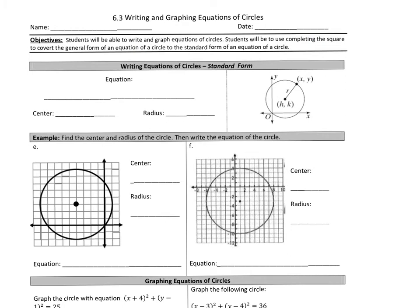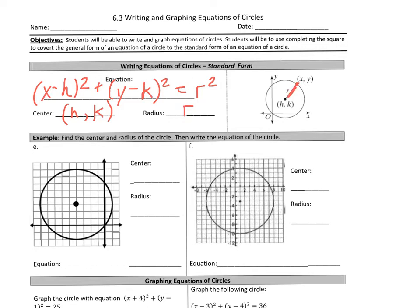So for the equation of a circle, it's going to be written out like this: x minus h squared plus y minus k squared equals r squared. In this case, my radius is r, and my center is the coordinates h and k, while x and y are any point on the circle. So x and y represent a point on the circle, r is the radius, and hk is the center.